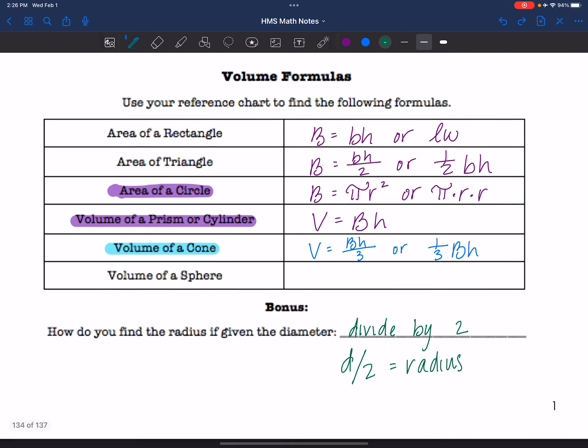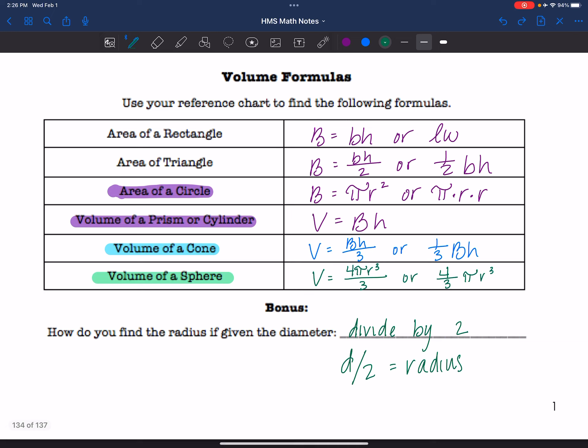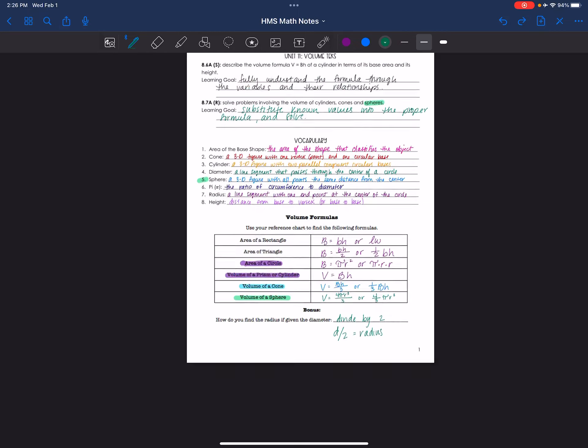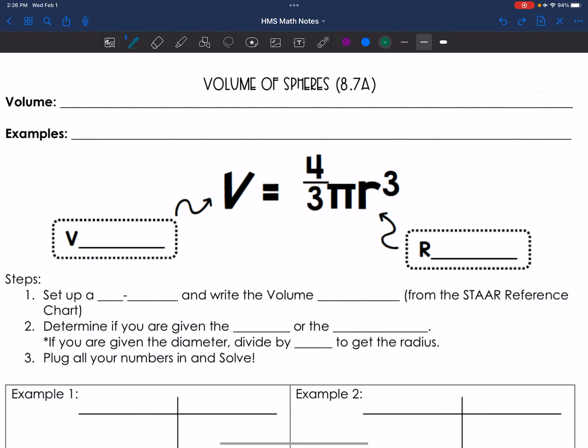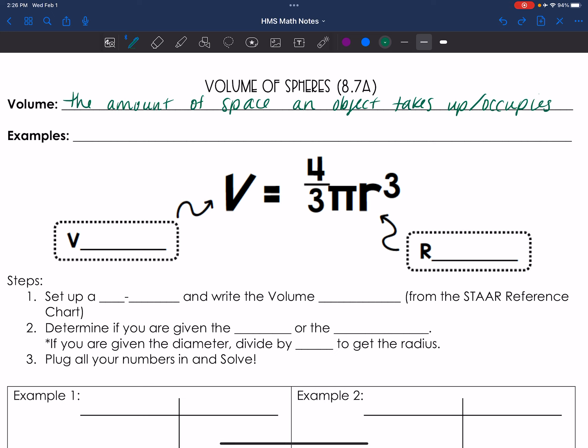The formula we're dealing with is the volume of a sphere, which is 4 thirds pi r cubed or 4 pi r cubed all over 3. So go to your last page. And you should already have this memorized because you've already written it twice, but volume is the amount of space an object takes up or occupies. So like the amount of air in a beach ball, because a beach ball is a sphere.